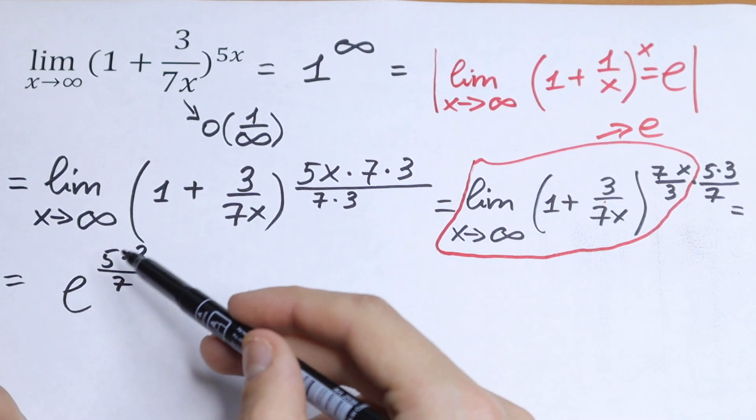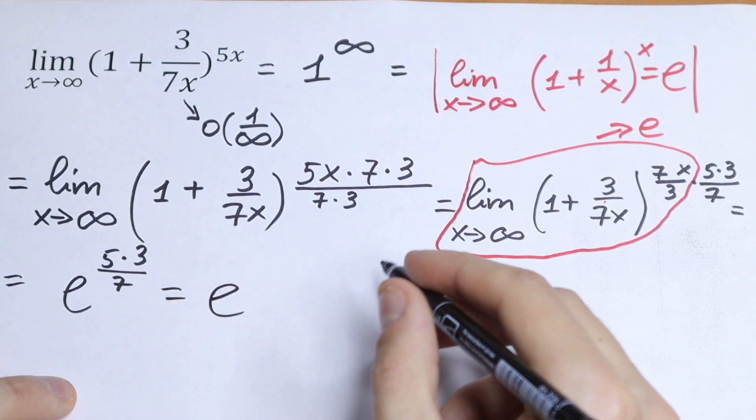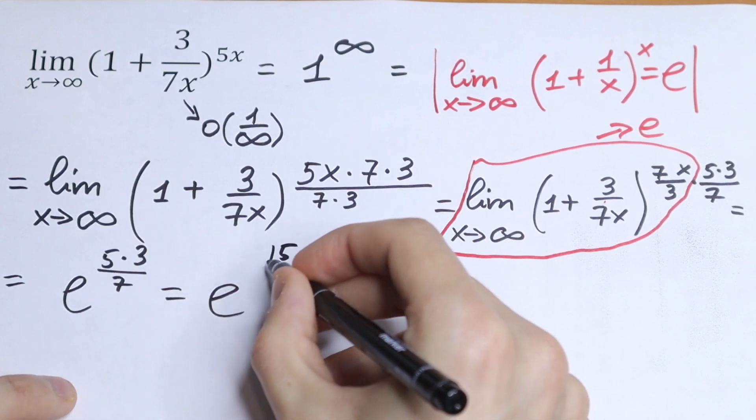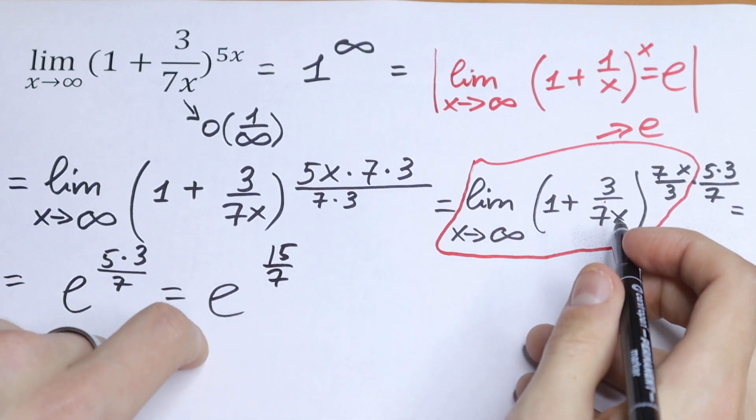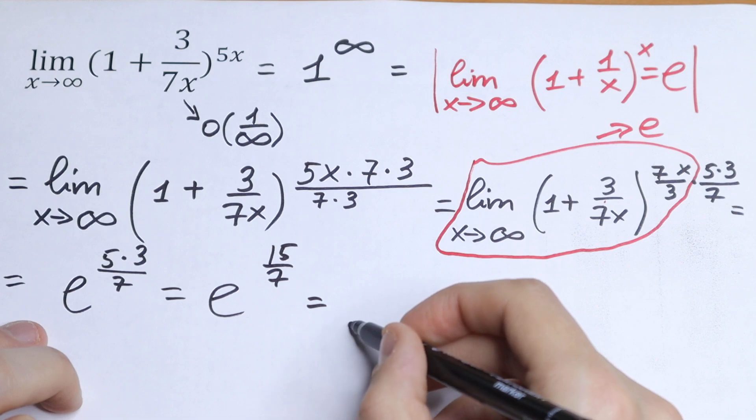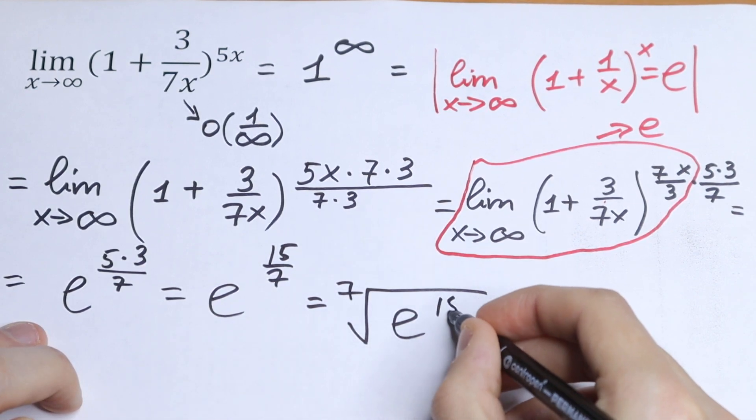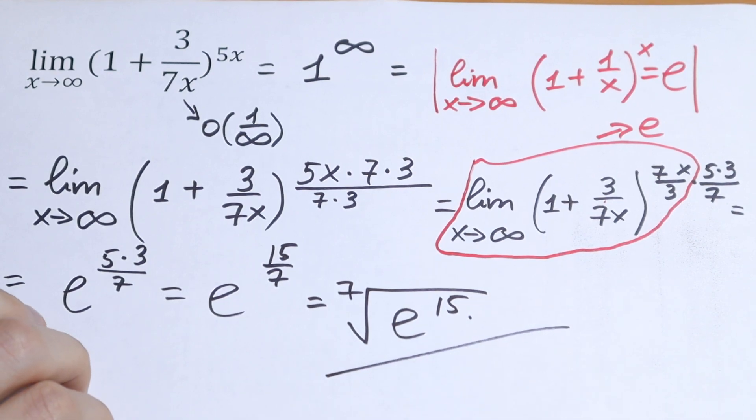As a result, we will have e to the power 5 times 3 over 7. As a result, we will have e to the power 15 over 7. And we can write this limit using a root sign. So we will have 7th root of e to the 15th power. And this is our answer.